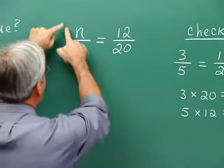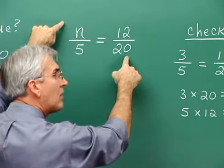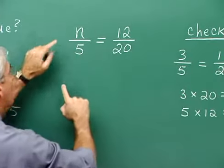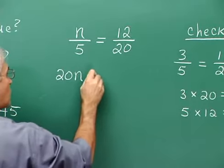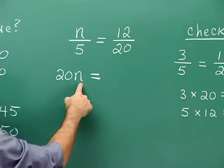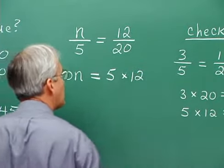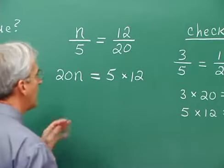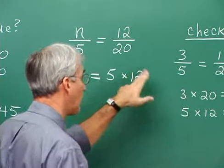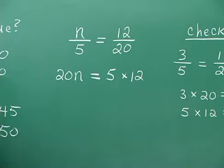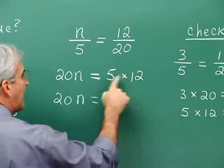We think about multiplying along this diagonal: the letter n times 20. We don't know the value of n, but we can write the product as 20n, which means 20 times n. And then along the other diagonal, it's 5 times 12. We can illustrate the multiplication using a cross, a dot, or parentheses. On the right side, 5 times 12 is 60.